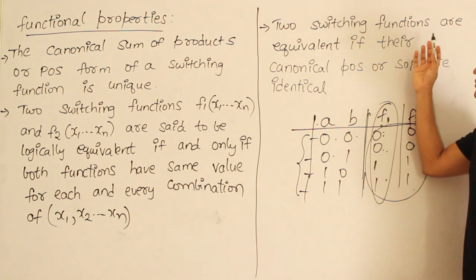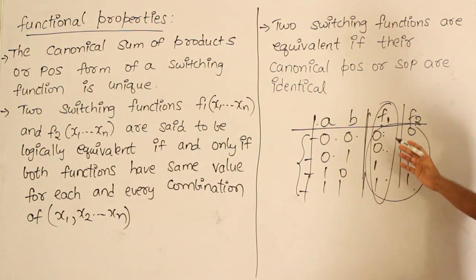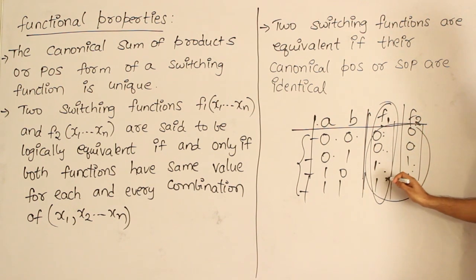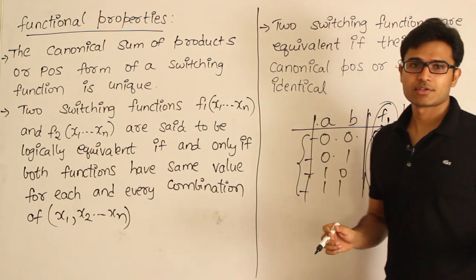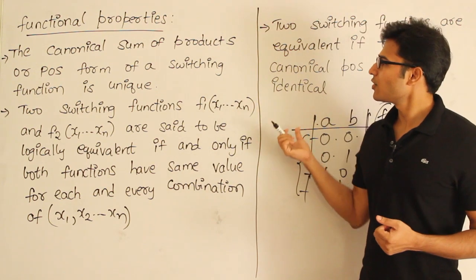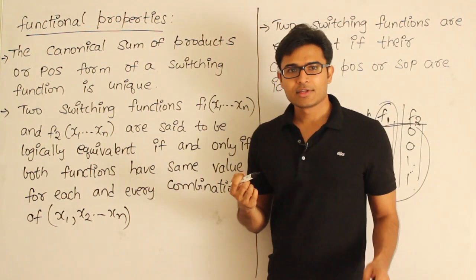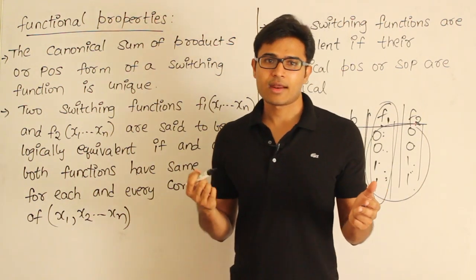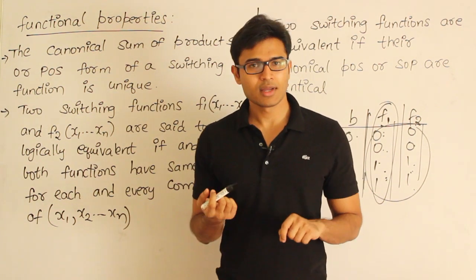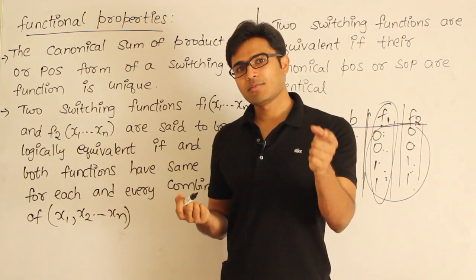Two functions are equivalent if their canonical POS or SOP forms are identical. If they have the same truth table with the same values assigned for every combination, then obviously their canonical POS or SOP forms are equal. Now, given any number of variables and any number of functions, let us see how many functions are possible given some variables, and what is the relationship between the number of variables and the number of functions.